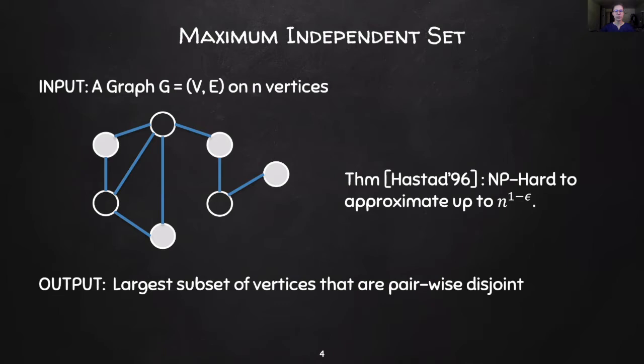Recall, MIS is notoriously hard to approximate on general graphs. In particular, Håstad in '96 showed that the maximum independent set with a factor of n to the 1 minus epsilon for any constant epsilon is NP-hard.